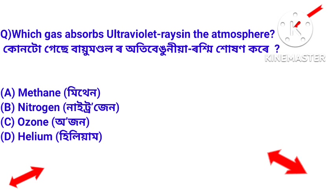Next question: which gas absorbs ultraviolet rays in the atmosphere? Answer: Ozone gas. Ozone gas absorbs ultraviolet rays in the atmosphere.